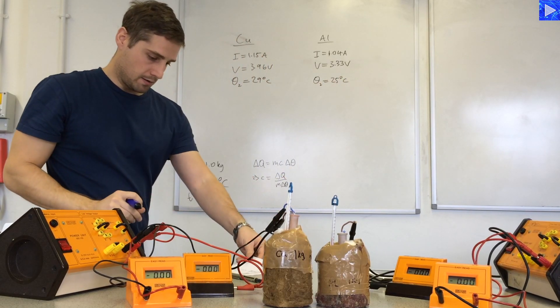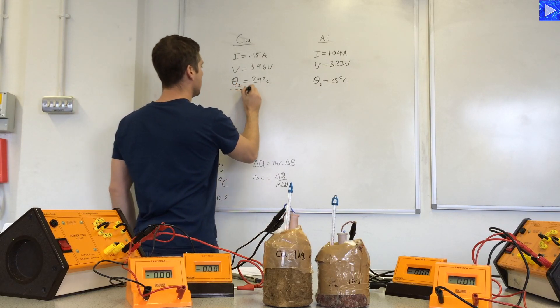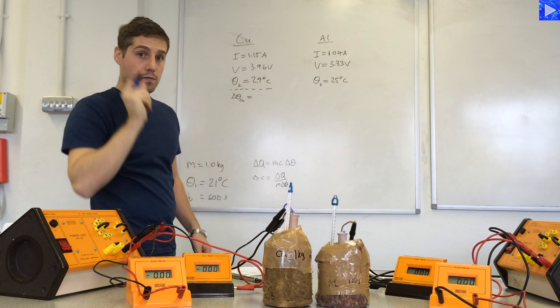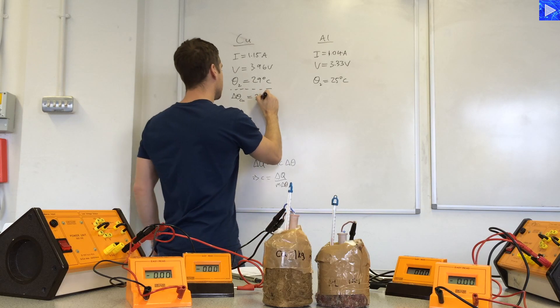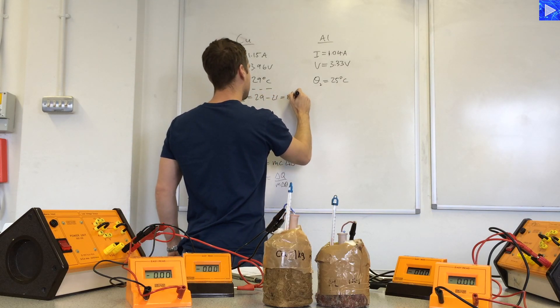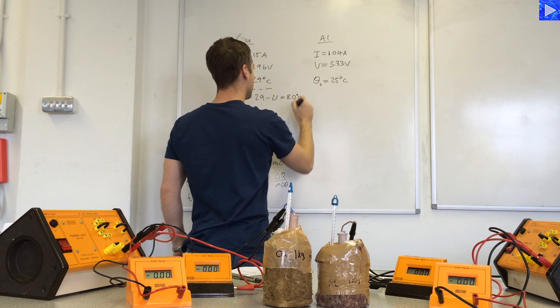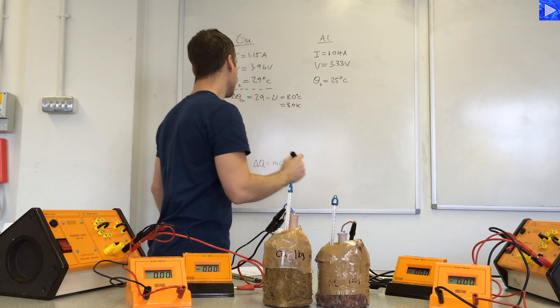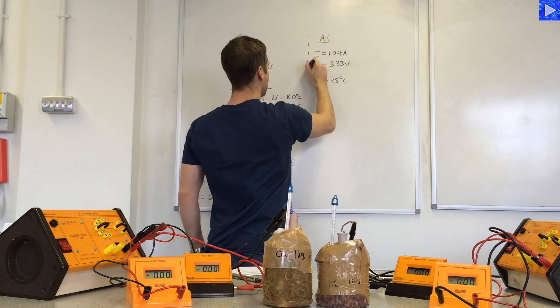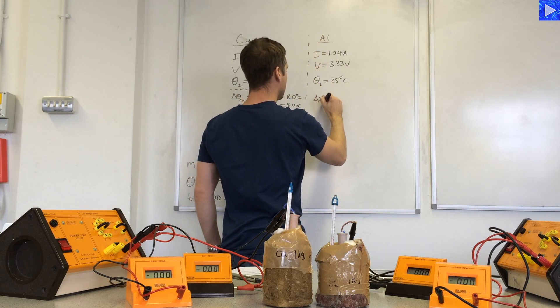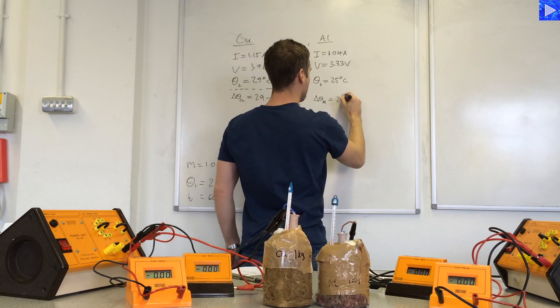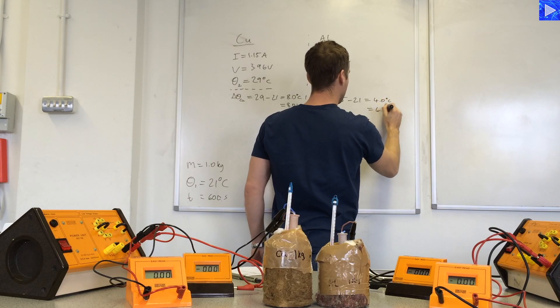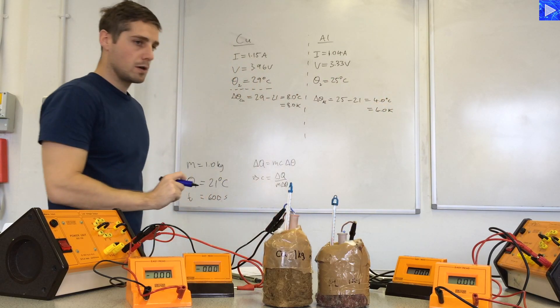Right, now we can work out some data. Delta theta for the copper block is 29 minus 21, which is 8 degrees C, or which is equal to 8 degrees Kelvin. And delta theta for the aluminum.